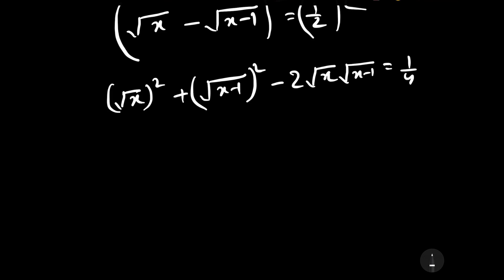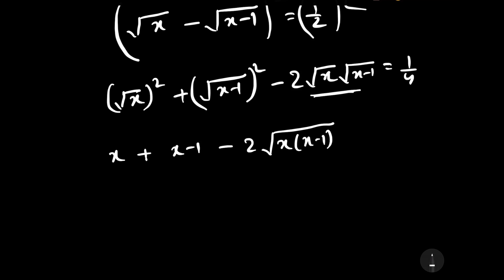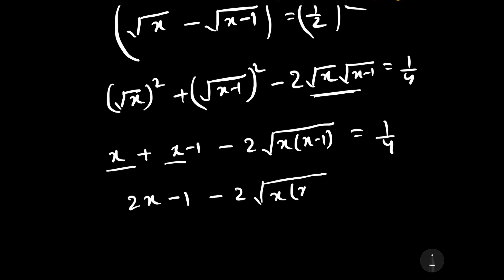Square of square root of x equals x, and square of square root of (x minus 1) equals x minus 1. So we get: x plus (x minus 1) minus 2 times square root of x(x minus 1) equals 1/4. Simplifying: 2x minus 1 minus 2 square root of x(x minus 1) equals 1/4.